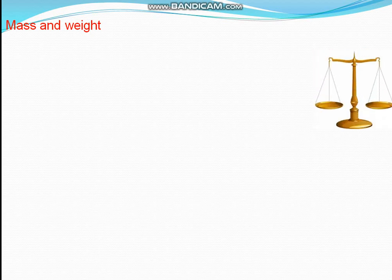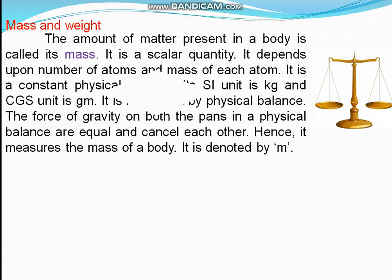Mass and weight. This device is used to measure mass. Mass is the amount of matter present in a body. It is a scalar quantity that depends upon the number of atoms and mass of each atom. Larger the size of the body, more atoms, more mass. Equal volumes of two objects may have different masses because the mass of each atom and number of atoms present in them will be different. It is a constant physical quantity; its SI unit is kg and CGS unit is gram.